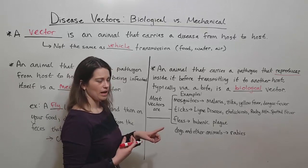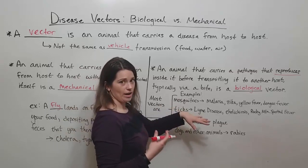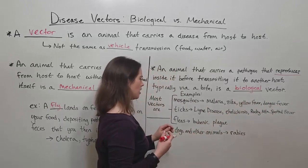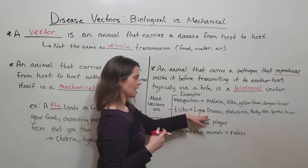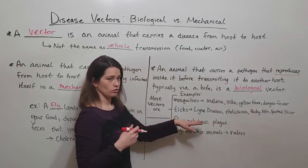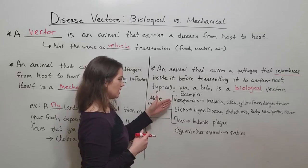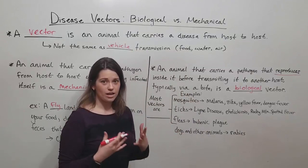Some examples of biological vectors include mosquitoes. Through their bites, mosquitoes can transmit a wide range of pathogens, including those that cause malaria, Zika, yellow fever, and dengue fever. The last three are viral diseases; malaria is a protozoan disease. Also ticks, which are biological vectors that can transmit Lyme disease, ehrlichiosis, and Rocky Mountain spotted fever. Fleas can transmit plague. Most vectors — mosquitoes, ticks, fleas, and flies — that carry human disease from one person to another are arthropods.